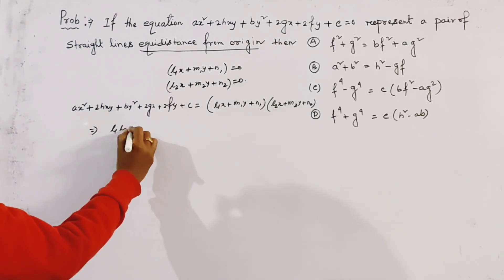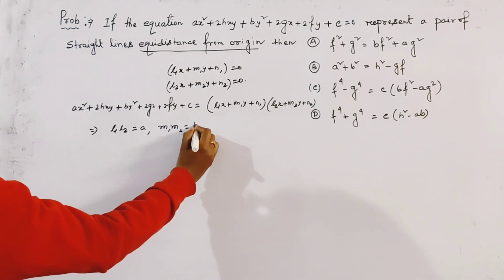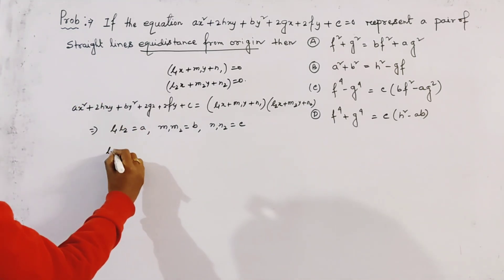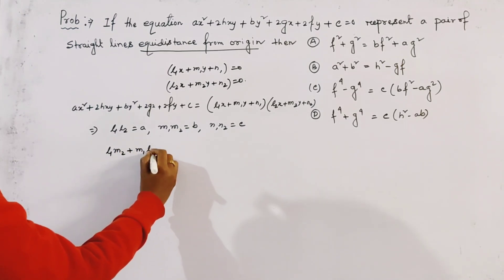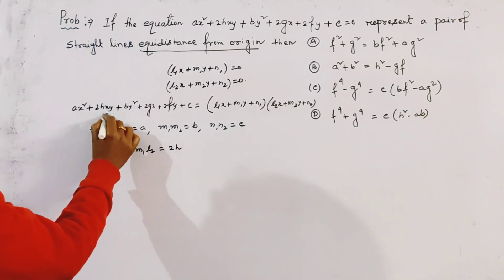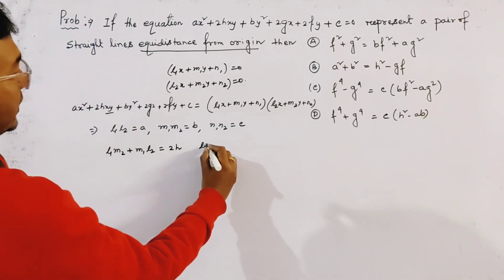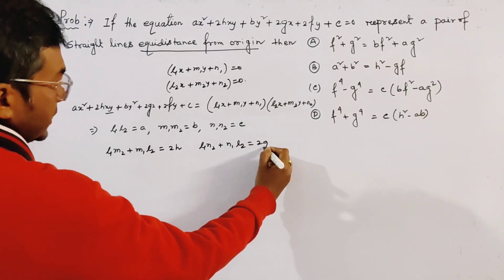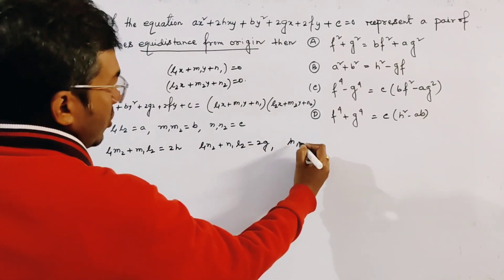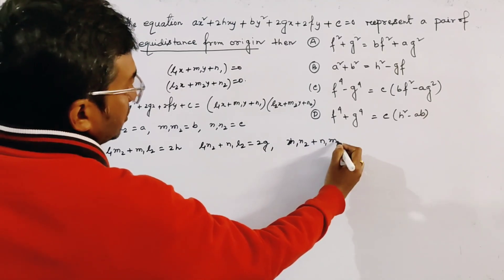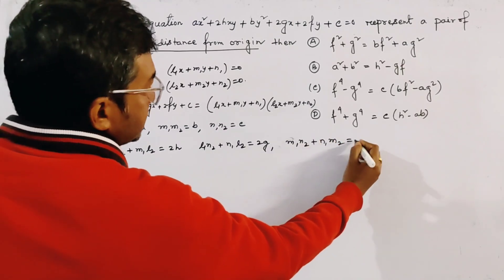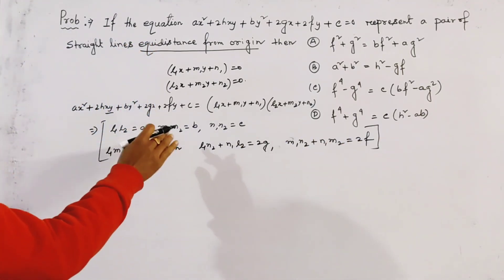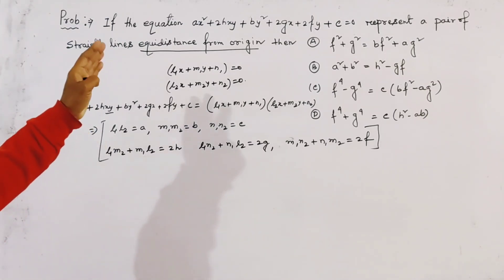Comparing coefficients, we get: L1L2 equals A, M1M2 equals B, N1N2 equals C, L1N2 plus N1L2 equals 2G, and M1N2 plus N1M2 equals 2F. These six relations we have to keep in mind. We directly use these six relations to solve this type of problem very fast.